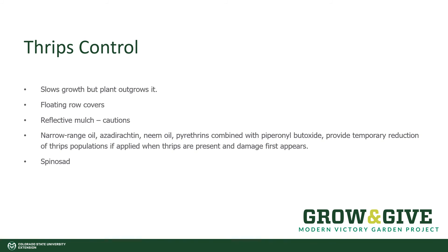If you're using some type of a plastic mulch, using a colored mulch like blue or a reflective mulch can be successful sometimes in confusing thrips. They can't find the plant because of the color behind it and therefore they move on. You might want to make sure that if you're using one of these plastic mulches, you are weighing it down on all the edges so wind doesn't tease it up and blow it away to Kansas.